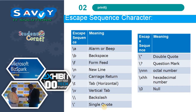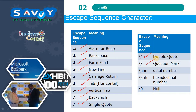The escape sequence characters are: \a for alarm or beep sound, \b for backspace, \f for form feed, \n for new line, \r for carriage return, \t for horizontal tab, \v for vertical tab, \\ for backslash, \' for single quote, \" for double quote, \? for question mark, \nnn for octal number, \xhh for hexadecimal number, and \0 for null.